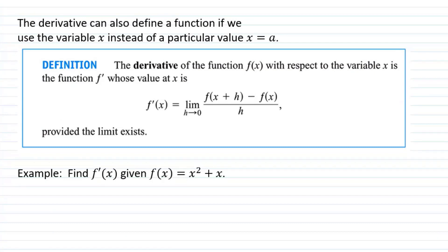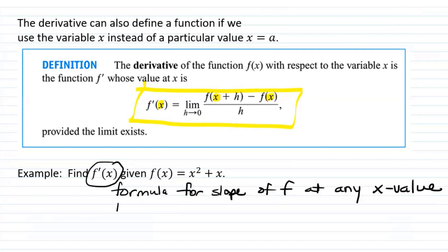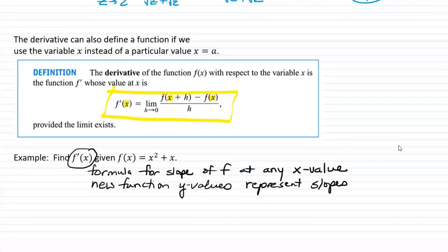It's going to be a function that represents the slope of the original function at any point. In other words, it's going to be a formula for the slope of the function at any point that we want to look at. So in this next problem, I'm going to use f prime of x, not a, f prime of x equals the limit as h goes to zero of f of x plus h minus f of x. Those x's are going to stay in there. They're going to stay variables. It's actually going to be a new function, a new function where the y values represent the slopes of the other function.